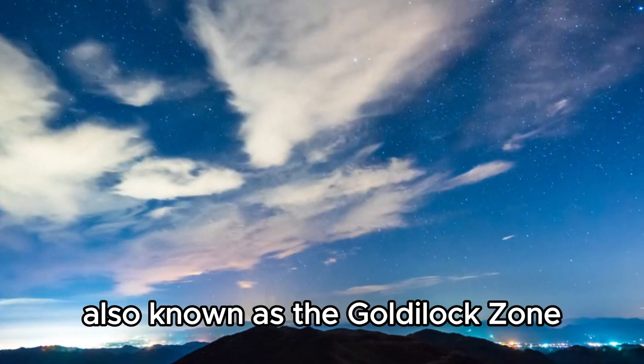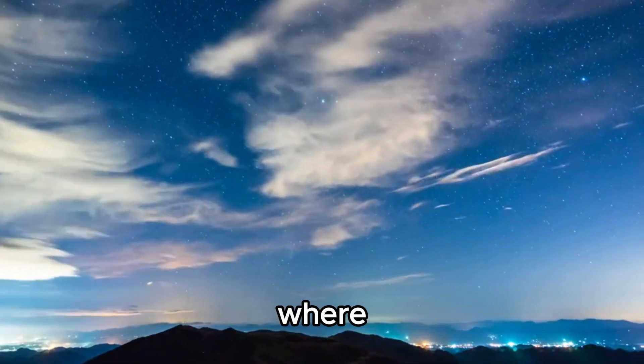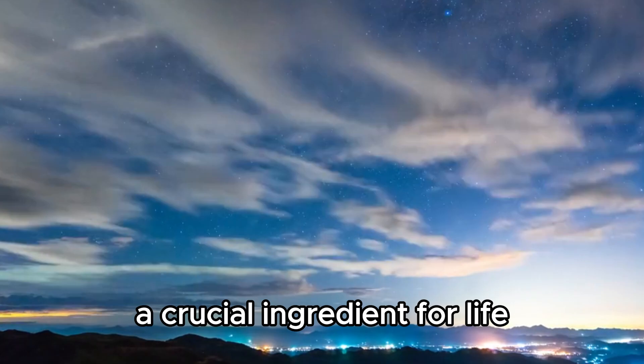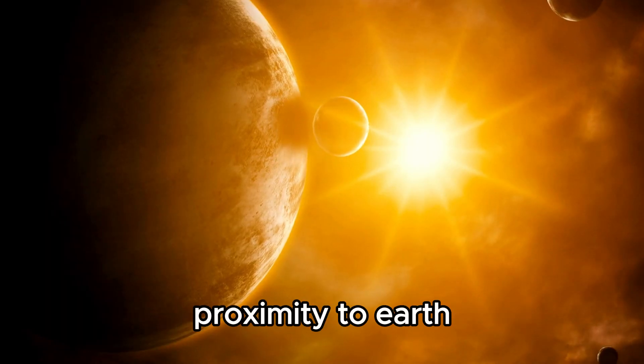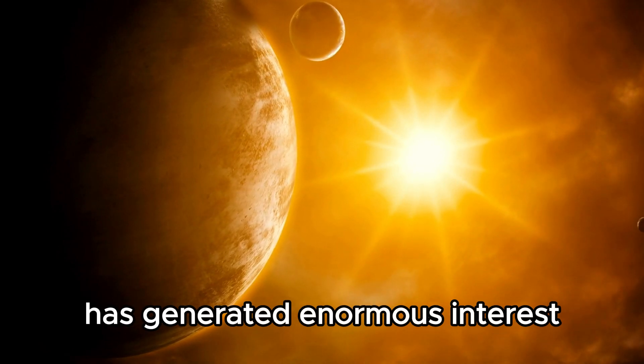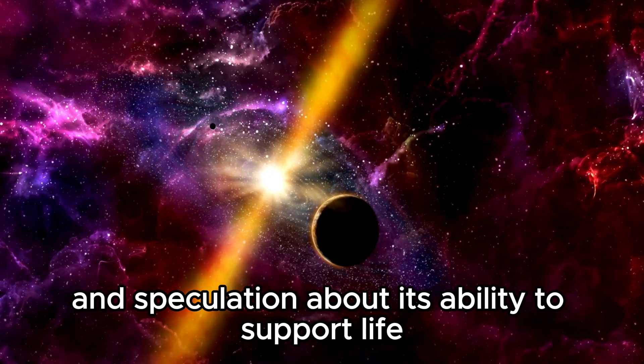Also known as the Goldilocks zone, which is the region around the star where conditions could allow the presence of liquid water, a crucial ingredient for life as we know it. Proxima b's proximity to Earth and its location within the habitable zone has generated enormous interest and speculation about its ability to support life.